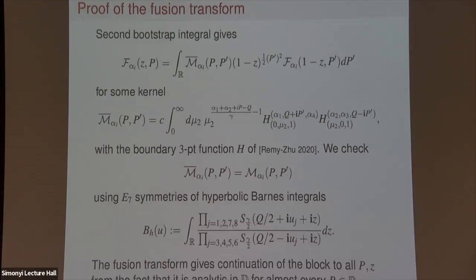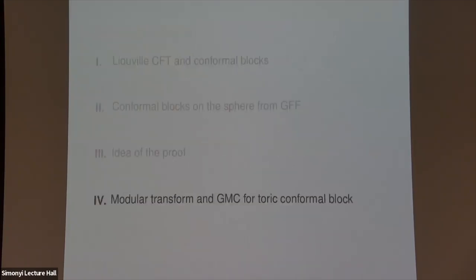We've shown how to get GMC expressions for the spherical conformal block and proved the fusion transform. To show the conformal block has the desired analytic properties — extension in Z as well as in the parameter p — we proceed in two stages. First, for almost every value of p, we know the conformal block is analytic in Z in the unit disk. By using the fusion transform, we extend that property to all p and Z by transferring the analytic properties in p from the right-hand side, where p only appears in the fusion kernel, to the left-hand side. It turns out that the starting point of our work was actually the torus conformal blocks, and we realized our techniques could also apply to the spherical blocks.